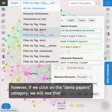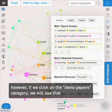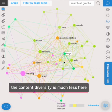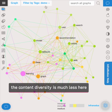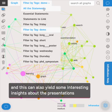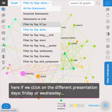However, if we click on the demo papers actually, we see that the content diversity is much less here. So this can also indicate some interesting insights about the way papers are presented.